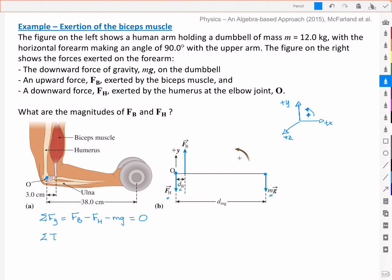The sum of my torques then tell me that I have the humerus force, and it's applied at a moment arm of zero, because it's applied at a distance of zero, where I've chosen that pivot point at the origin O, or the pivot point O. And then I have the torque due to the biceps muscle, and it's applied at a distance dB. And it's going to want to torque it or spin it, rotate it in the positive direction. So it's a positive torque. And lastly, I have the torque due to the weight of the dumbbell, and it's applied at a distance mg. And it's negative because it's going to want to pull it downward in the negative torque direction or in the clockwise direction.